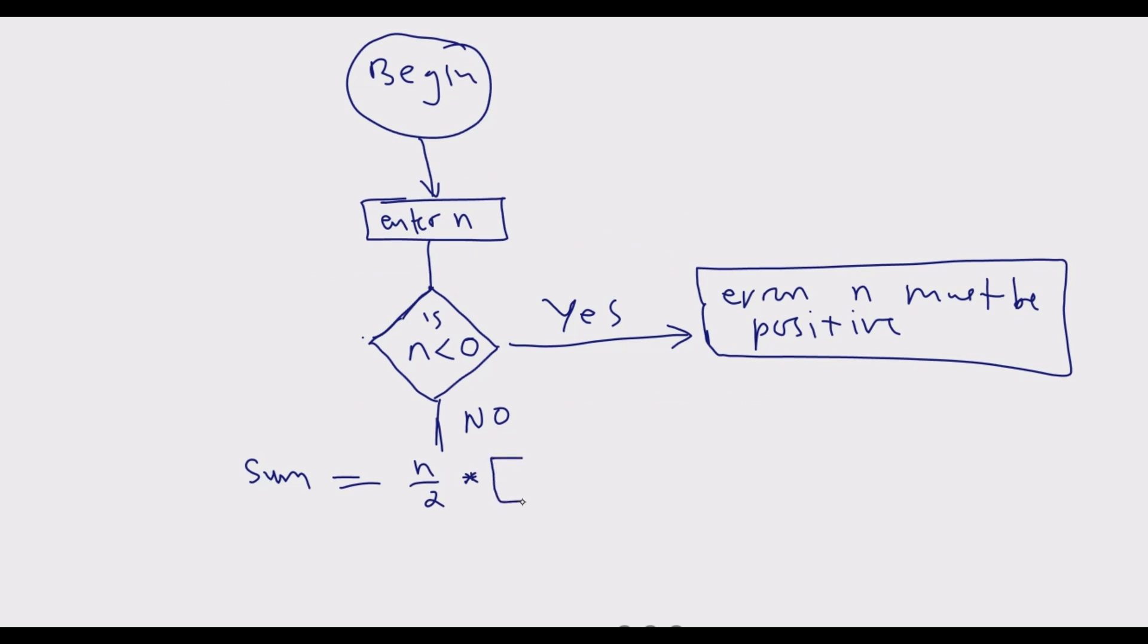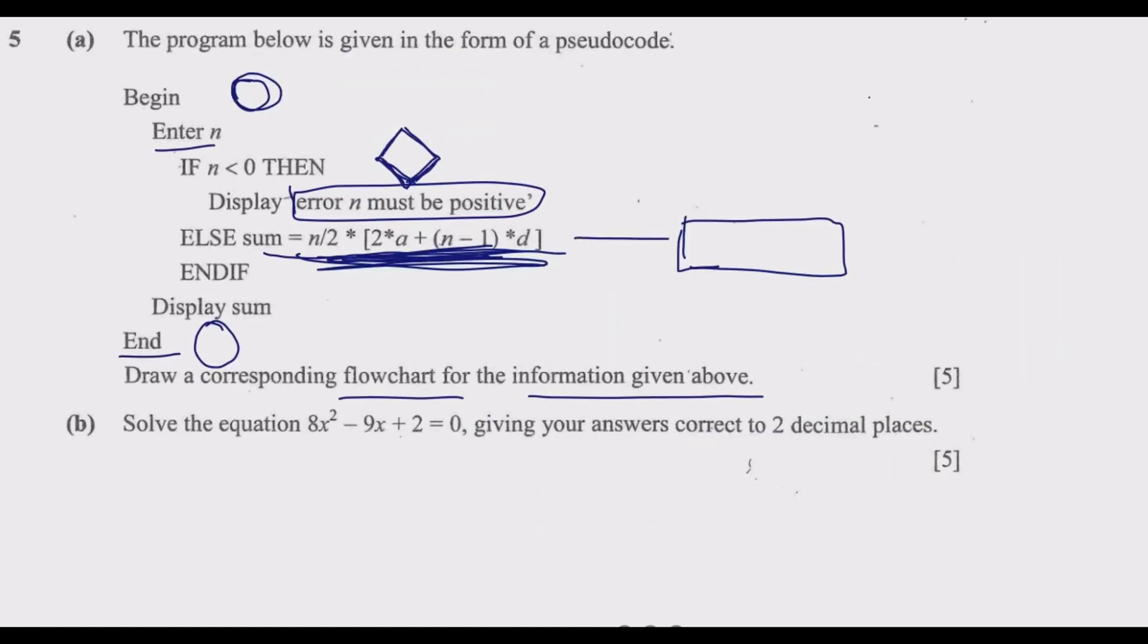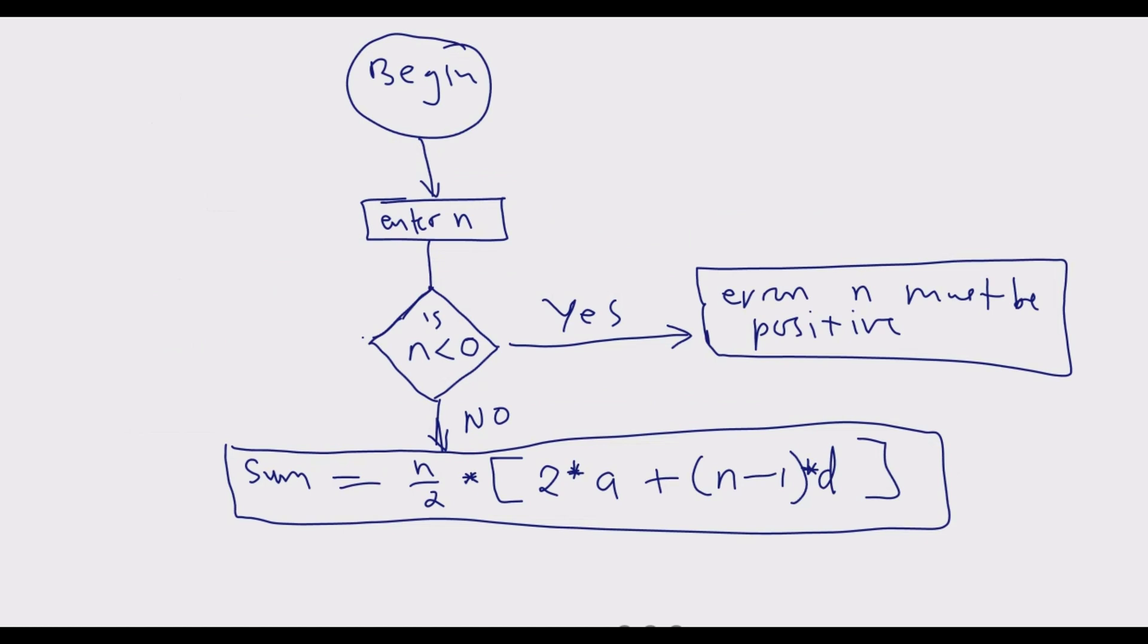Use the star for multiplication: n/2 * (2*a + (n-1)*d), then close the bracket. Put it in the rectangular shape. Once we do this calculation, we need to display the sum.